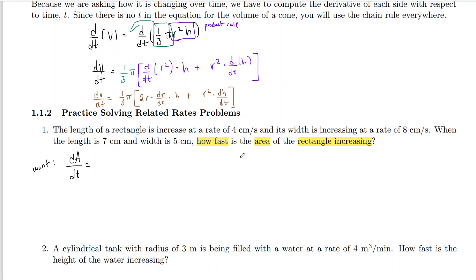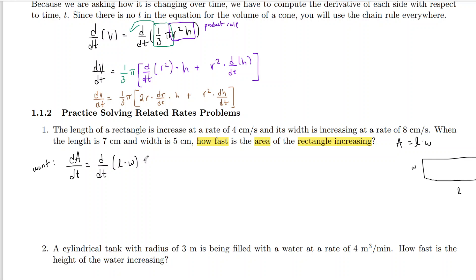The area of a rectangle is length times width. So we do d/dt of (l × w). Because both length and width are changing, we use the product rule. That gives us: dA/dt = (dl/dt)·w + l·(dw/dt).